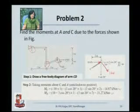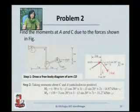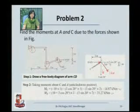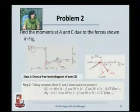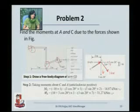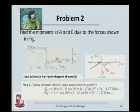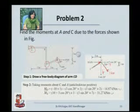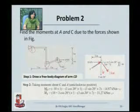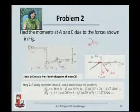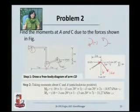We resolve forces into horizontal and vertical components, which makes it simpler to directly find the perpendicular distances for each component. Once we have found these components, let us check the equations. Here is the moment about C. What will be the sign convention? We have said in the beginning that all clockwise moments are going to be negative, and all anticlockwise moments are going to be positive.